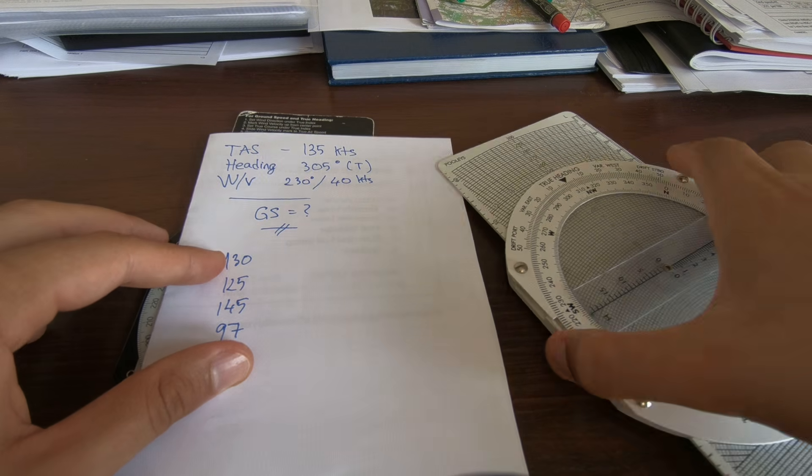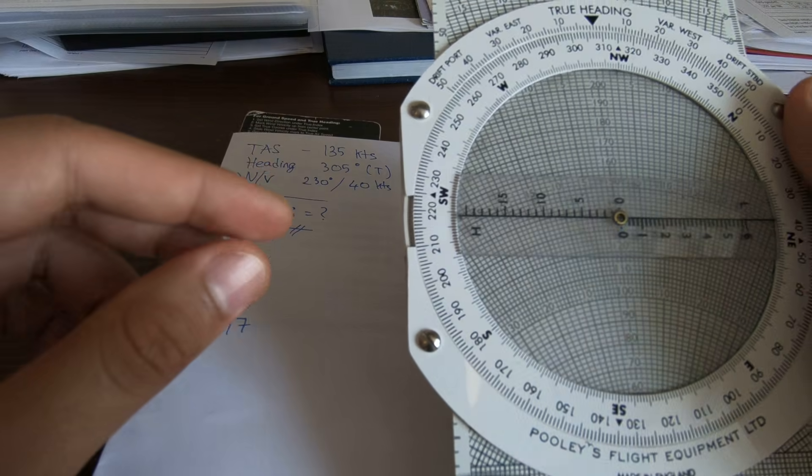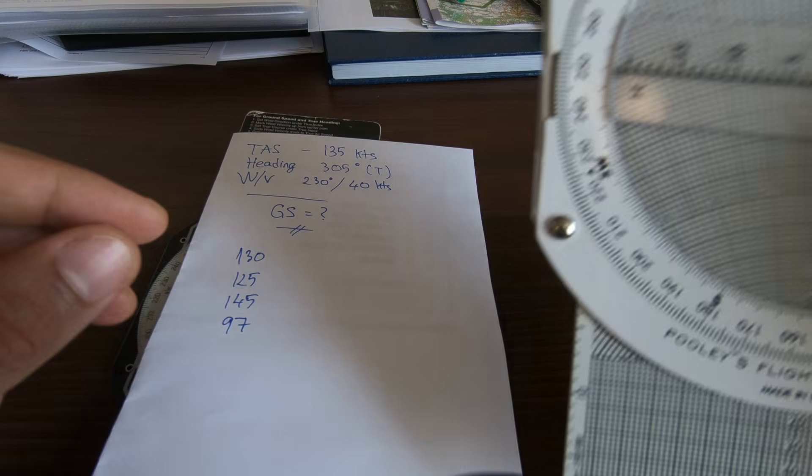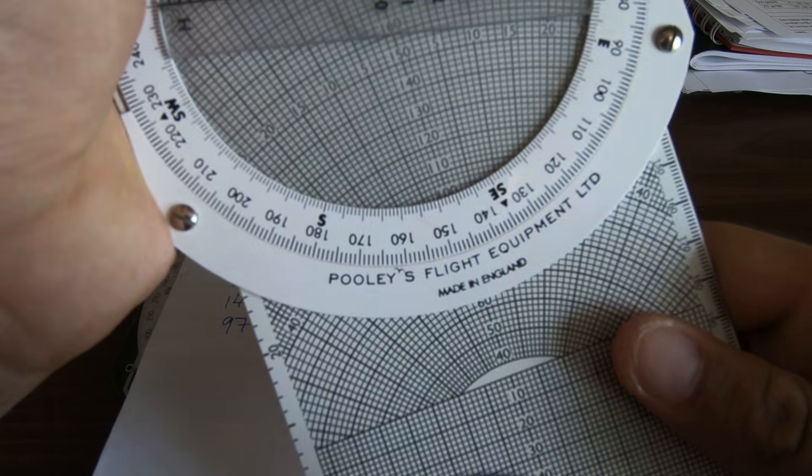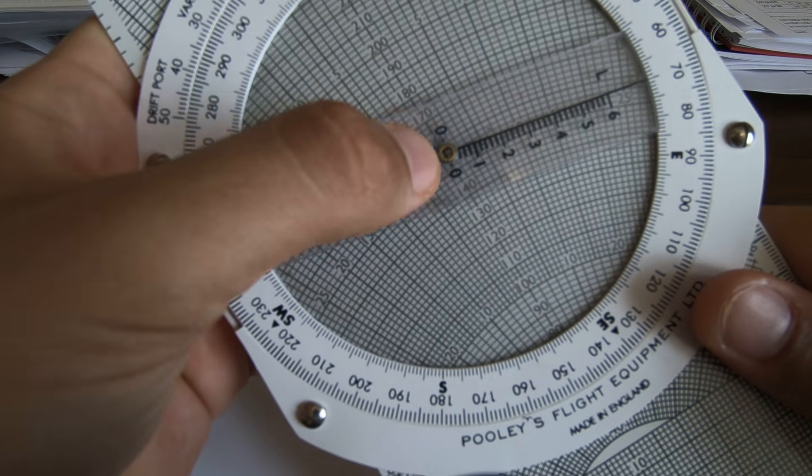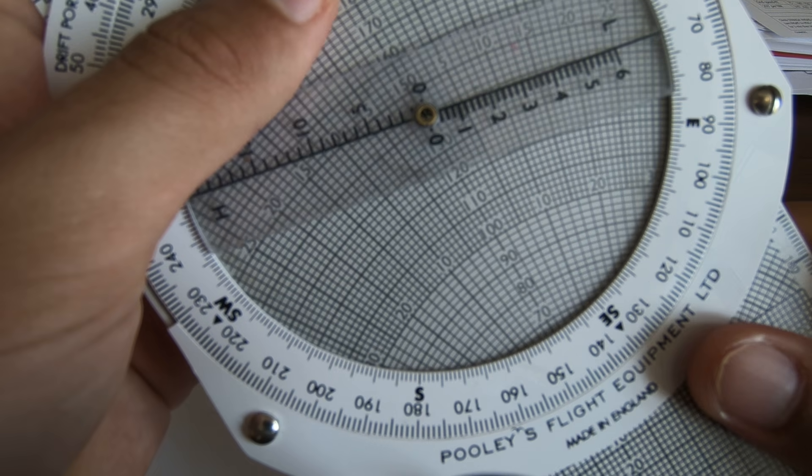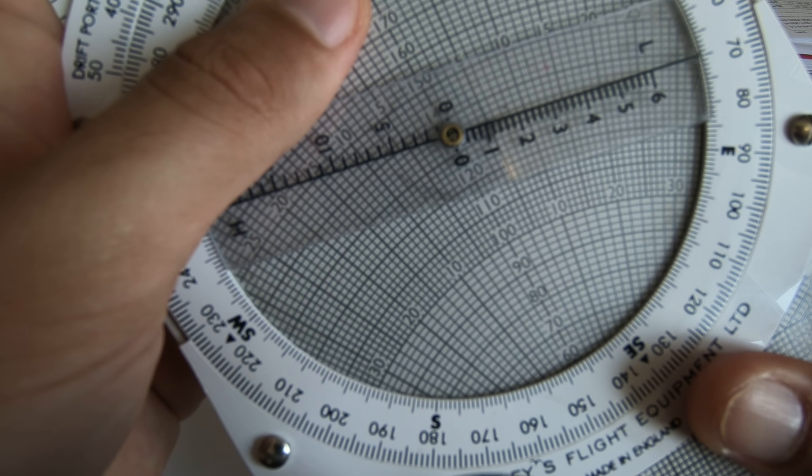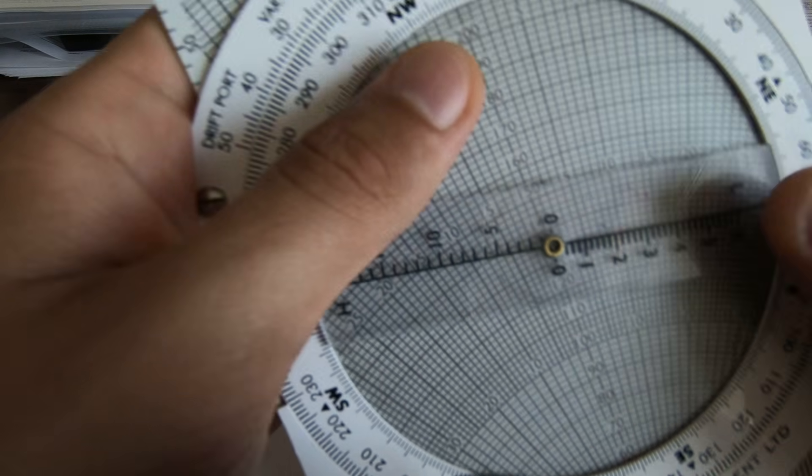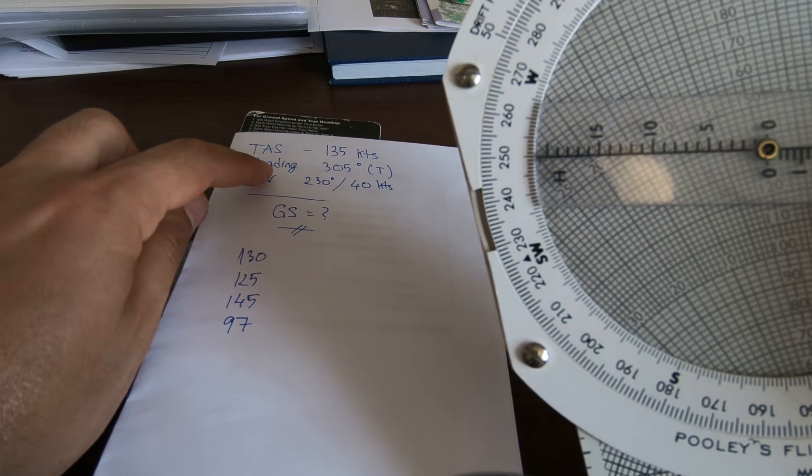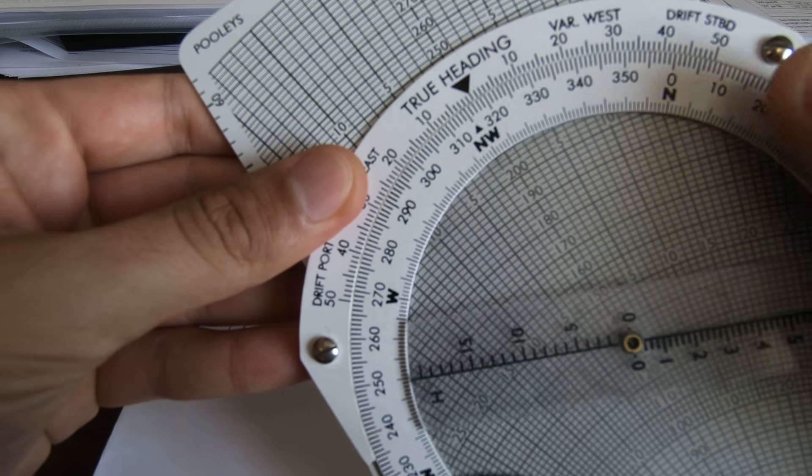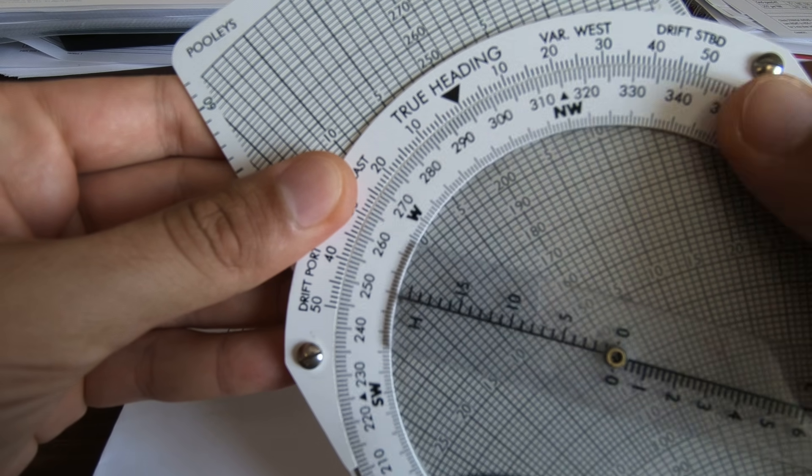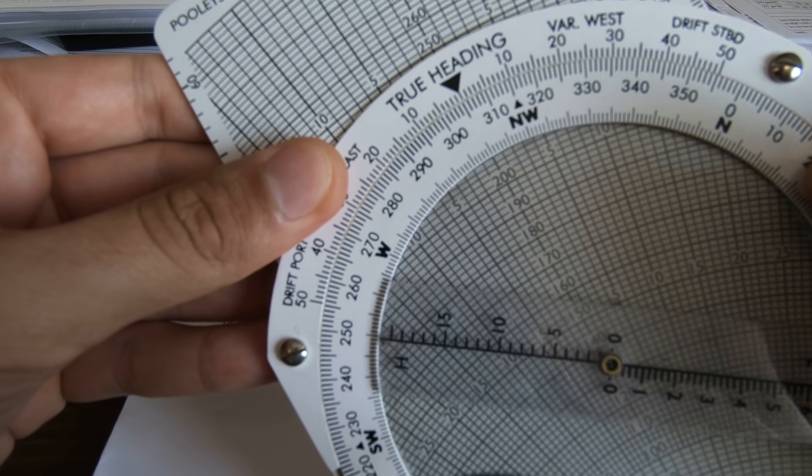We're going to make it fast so we don't lose time. First of all we have to set the true airspeed which is 135. Just set 135 here in the middle, there we go. And then we have to set the heading 305, so we put here true heading 305.